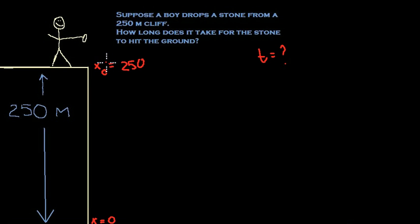Now, the other thing, another thing that they haven't told us, but we can kind of pretty much tell ourselves, is that during the process, or before he actually drops the stone, the initial velocity of the stone is going to be at zero. So velocity initial is going to be at zero.